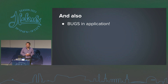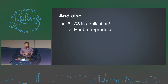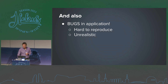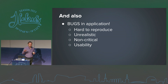Flaky tests are often caused by bugs in the application — that's why it's important to investigate them. Unfortunately these bugs are usually not critical, very hard to reproduce, and sometimes so fast that no real user could reproduce them. Developers and managers often decide not to fix them. But these bugs make our tests fragile and cause the whole company to lose trust in automated tests.